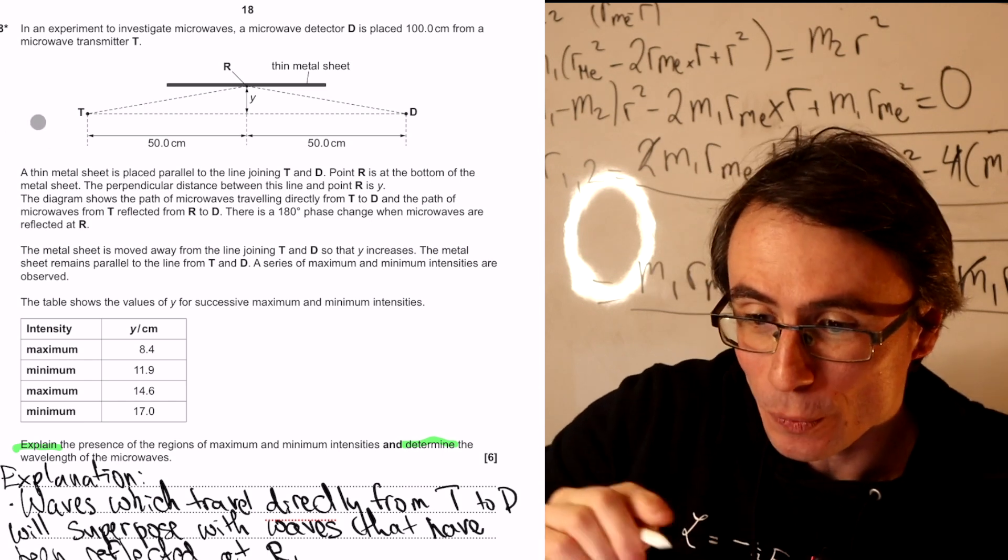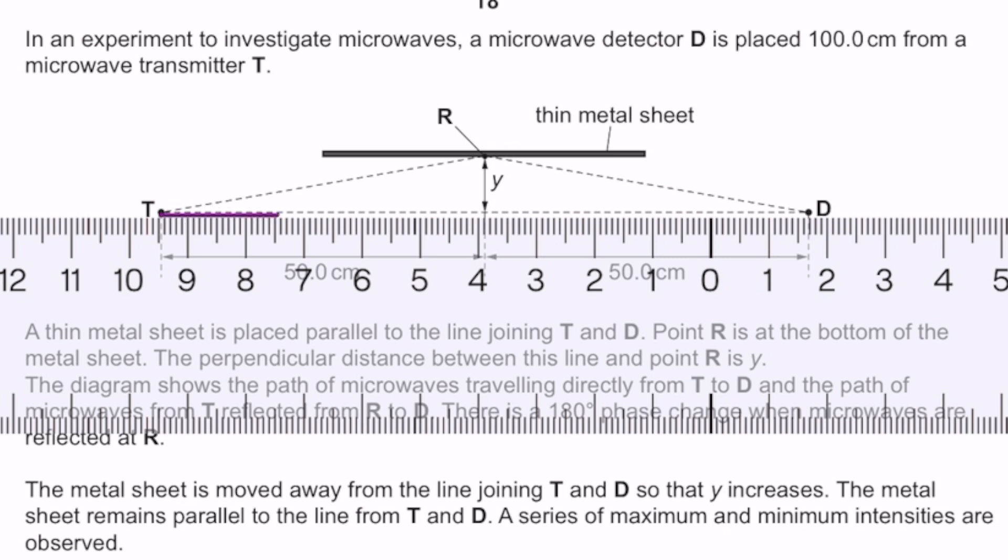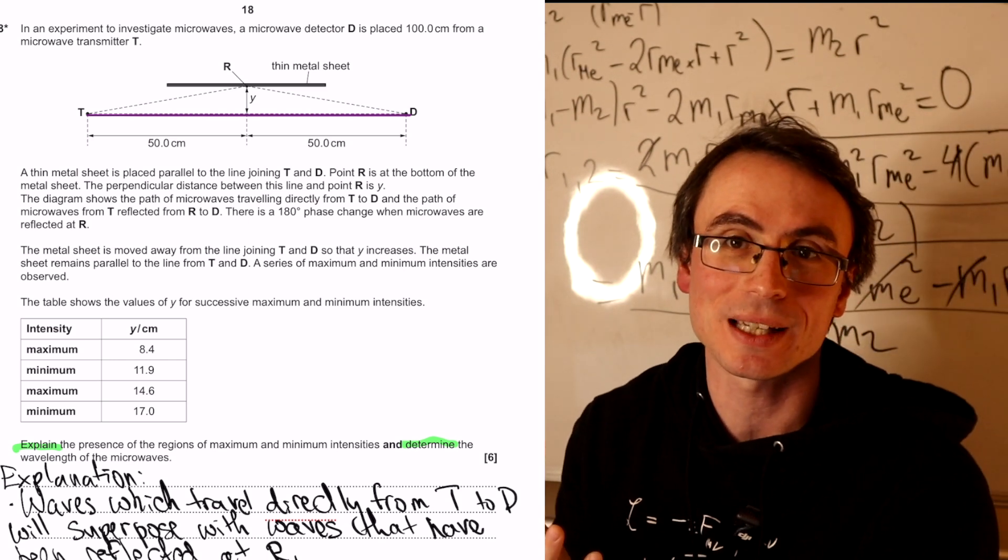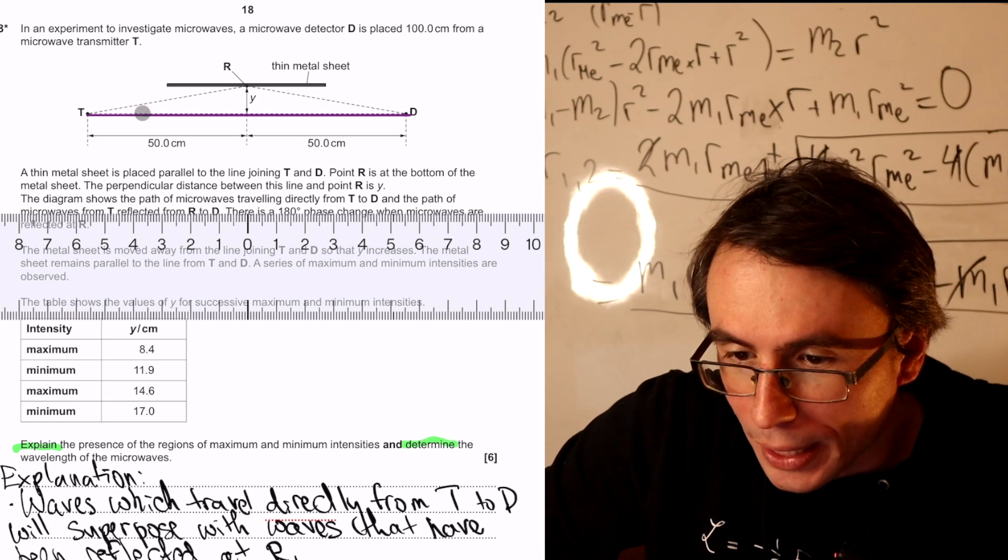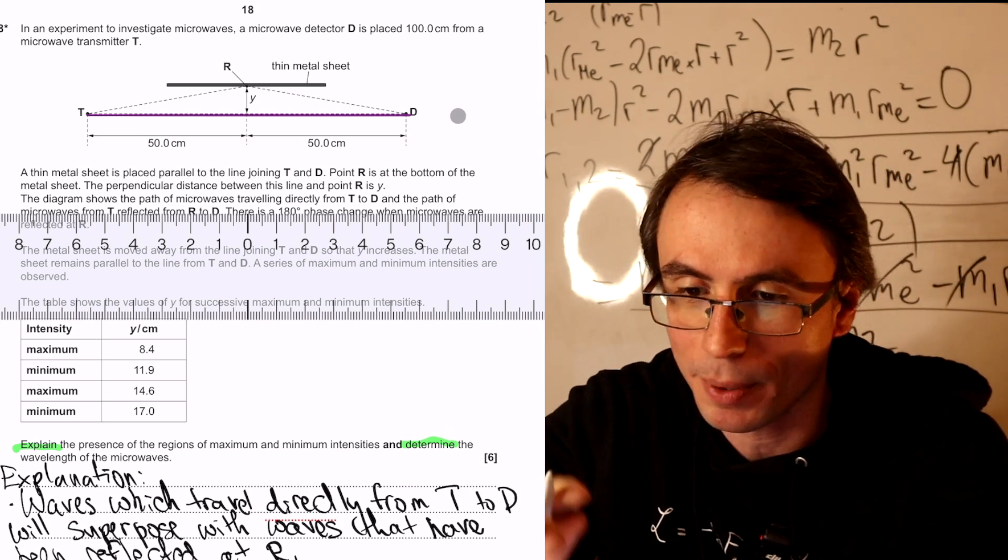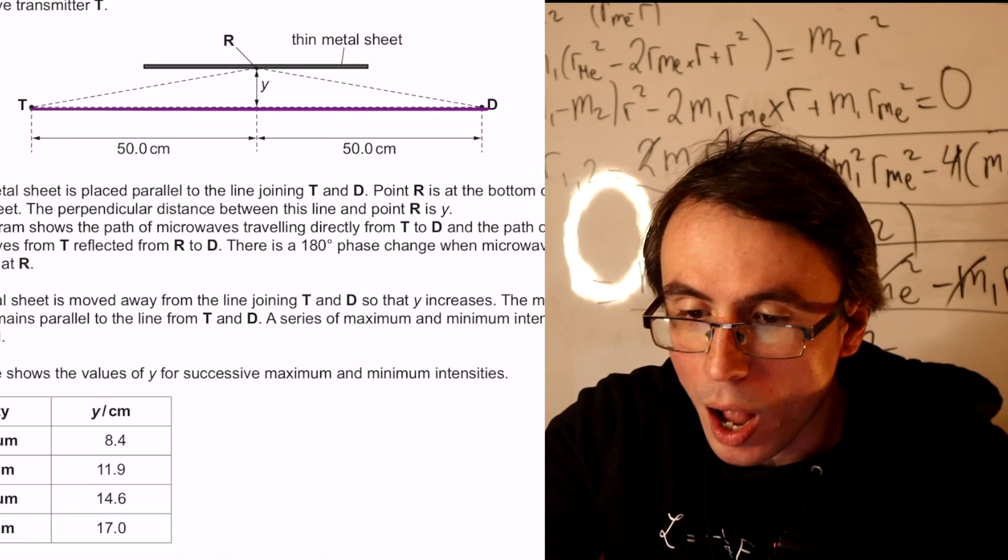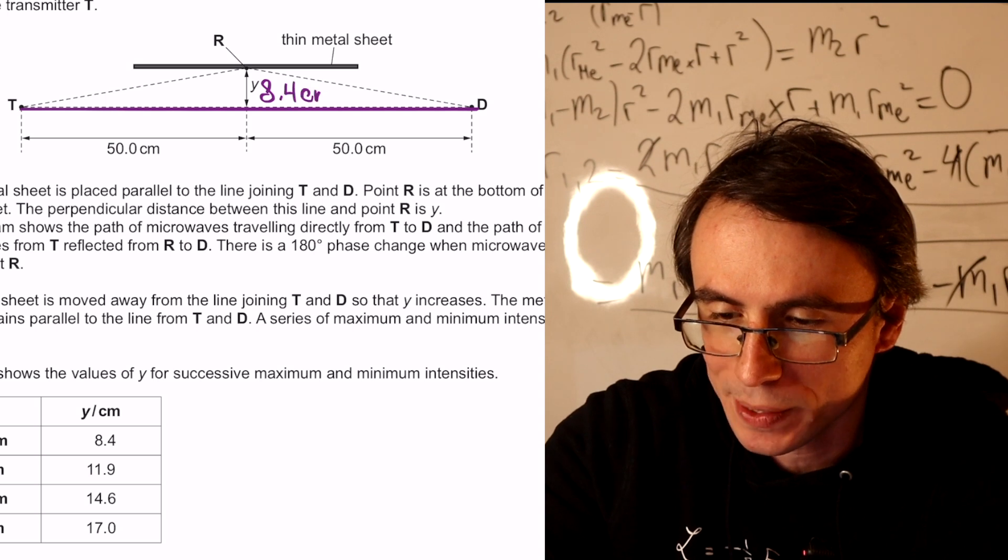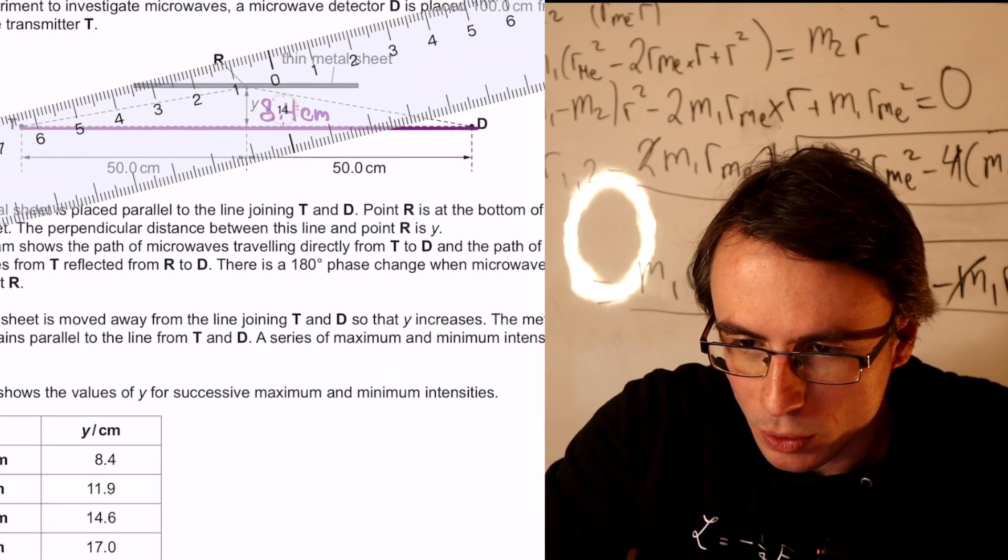So one of the direct paths will be simply along here. Let's change the color a little bit. And this path, as we can see, is going to be exactly 100 centimeters. The other path, which is along here, can be figured out using Pythagoras. So let's say that our distance y is simply 8.4 centimeters.